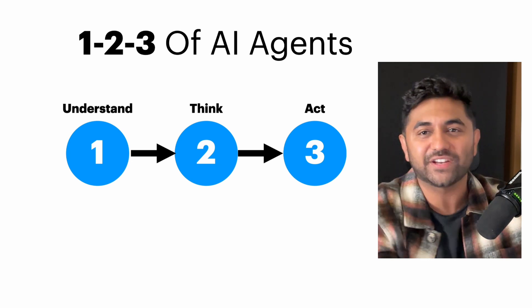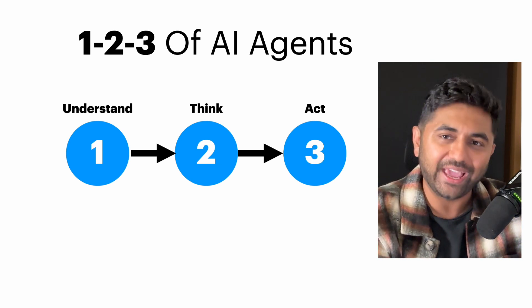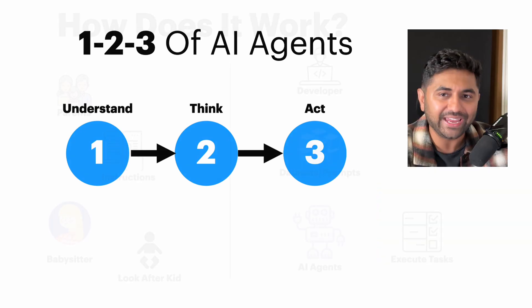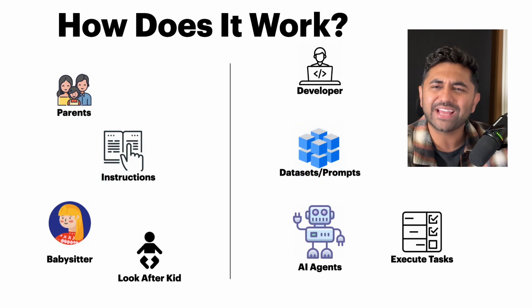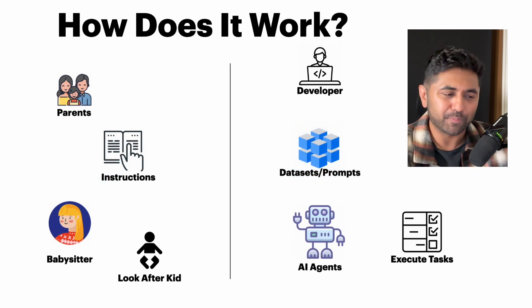In the simplest form: AI is data, and an AI agent is getting work done. That's the basic difference between AI and AI agents.